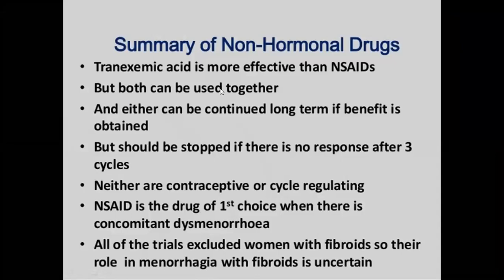In summary, tranexamic acid is more effective than other drugs — NSAIDs, ethamsylate, and diosmin — but combinations can be used and either can be continued long term once benefit is obtained. If the patient has relief of symptoms it should be continued for three months, but should be stopped if there is no response after three cycles. NSAIDs are the drug of first choice when there is concomitant dysmenorrhea. All trials excluded women with fibroids, so the role of non-hormonal drugs in AUB with fibroids is not proved.